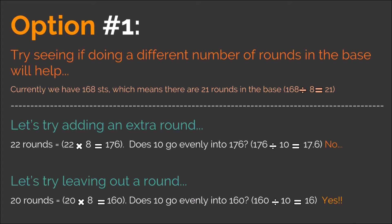Now let's divide 176 by 10 to see if the abbreviated graph will fit perfectly onto this base. Does 10 go evenly into 176? Unfortunately no — 176 divided by 10 equals 17.6, which means that abbreviated graph will not fit evenly onto a base with 22 rounds. Next, let's try leaving out a round. We started with 21 rounds, so let's move down to 20. 20 times 8 equals 160, so there would be 160 stitches in the last round of a base with 20 rounds. Does 10 go evenly into 160? 160 divided by 10 equals 16 — yes it does. So an abbreviated graph with 10 stitches would fit perfectly onto a base with 160 stitches in the last round if you repeat that abbreviated graph 16 times.